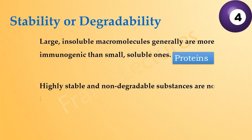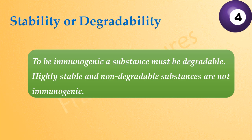On the other hand, highly stable and non-degradable substances are not immunogenic — for example, silicon. Thus, to be immunogenic a substance must be degradable; highly stable and non-degradable substances are not immunogenic.